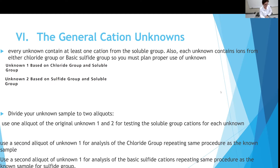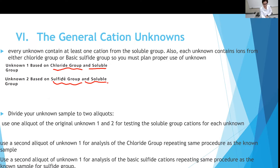As mentioned in the video and in the lab manual, I tried not to mix the sulfide group with the chloride group. By separating them into two unknowns, we don't have to use hydrogen sulfide to precipitate. We can just use sodium hydroxide to precipitate the sulfide group — it's less problematic, less hazardous, and less toxic. That's the reason I separate the two unknowns.